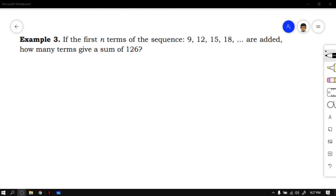Let us now start answering example number 3. If the first n terms of the sequence 9, 12, 15, 18, and so on are added, how many terms give a sum of 126?